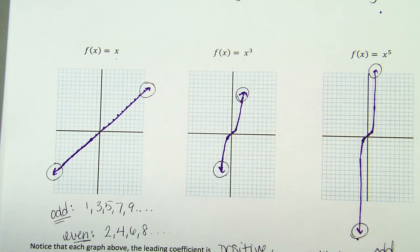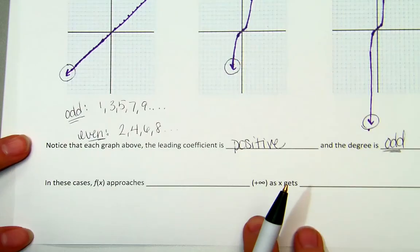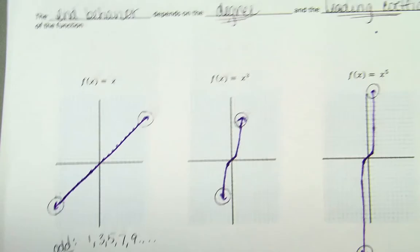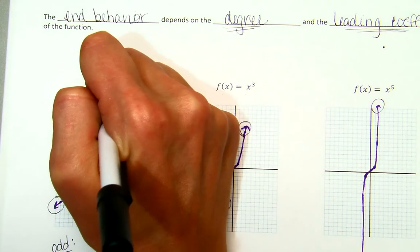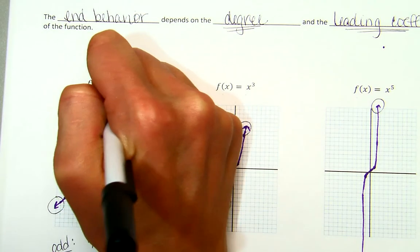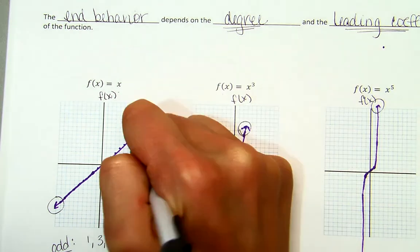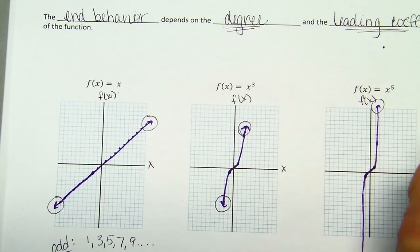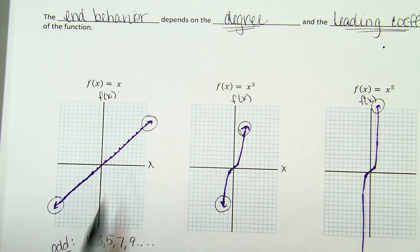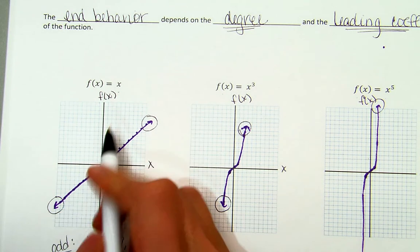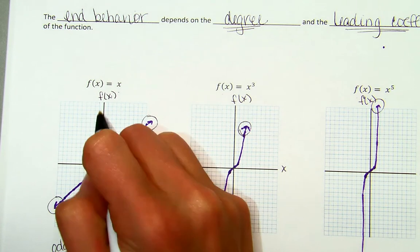So we're going to talk a little bit about end behavior, polynomial functions, and four different types that you could actually get. So in this case, before we move on to those four different scenarios, in this case, if you look at your three graphs, your f(x), which is your y-axis, is up top, and your x is obviously your horizontal axis. So if you're looking at your graph right here, in these three cases, your f(x) value, if you're watching your graph, as your f(x), which is your y, and I'll do this in green, as it gets bigger, so it approaches positive infinity, so as you're going up, your x is actually increasing and growing to positive infinity.